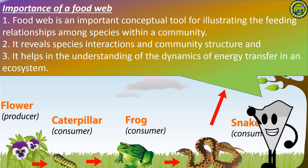Importance of a food web: 1. A food web is an important conceptual tool for illustrating the feeding relationships among species within a community. 2. It reveals species interactions and community structure. 3. It helps in the understanding of the dynamics of energy transfer in an ecosystem.